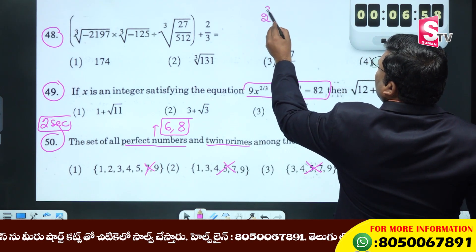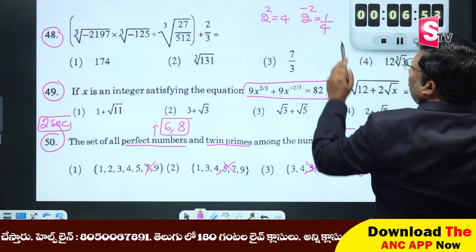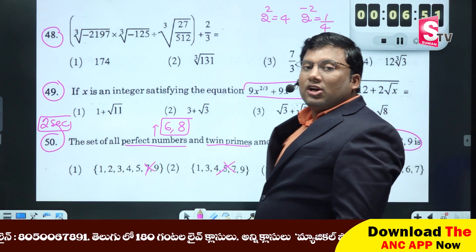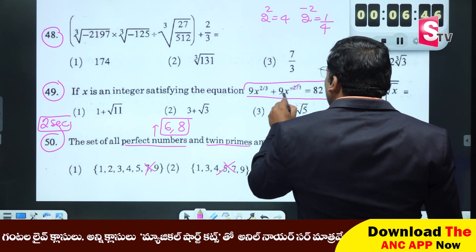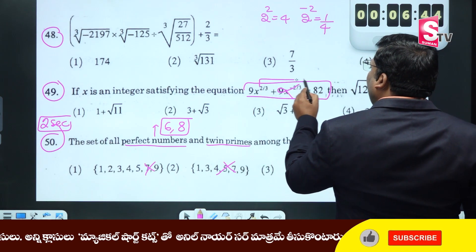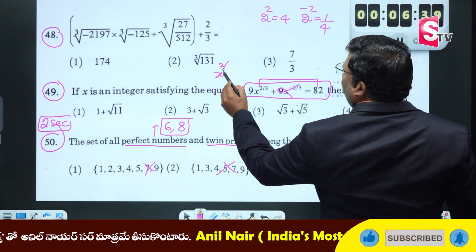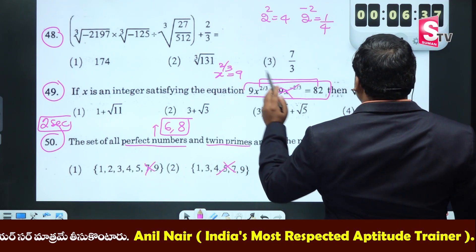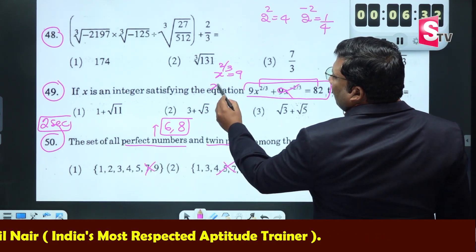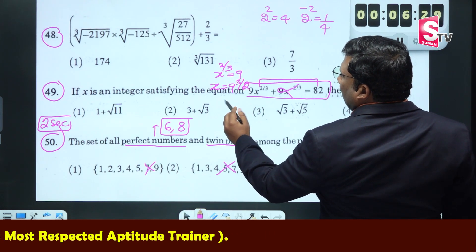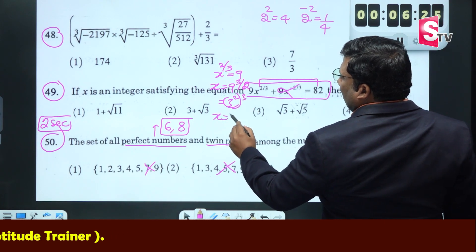See, 2 power 2 equals 4, and 2 power minus 2 equals 1/4. If you have a minus in the power, you will get the value of 1 over the base — that means it is a very small value. So 9x^(2/3) equals 82, and 9x^(2/3) equals 90. Therefore x^(2/3) equals 90, and x equals 9^(3/2), which is 3 squared to the power 3/2, giving x equals 27.